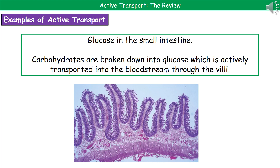The last thing we need to know about active transport is where we actually see it in living things. The first example is in the small intestine — at the bottom there's a microscope slide showing what this looks like. In order to take in glucose from the small intestine into our bloodstream, we have to actively transport that glucose from the lumen of the intestine into the blood, crossing the structures called villi, which are the little folds on the surface of the small intestine.